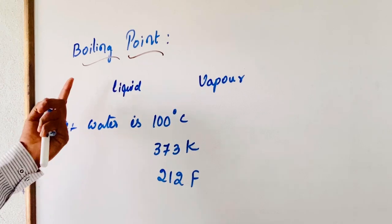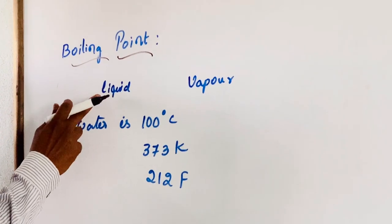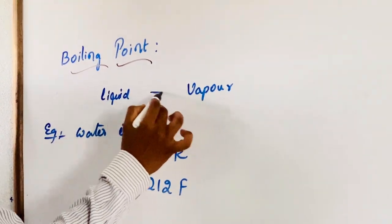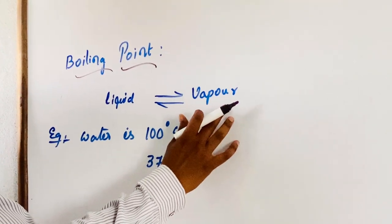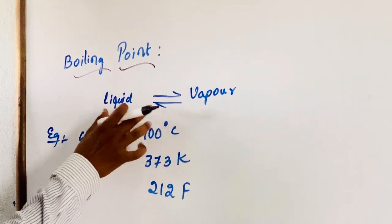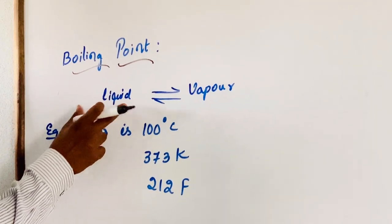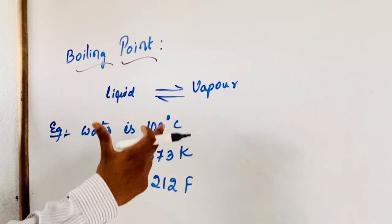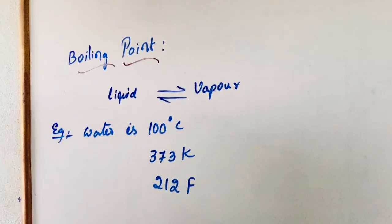What is the other definition of boiling point? The molecules of liquid are in equilibrium condition with the molecules of vapour. At that condition, the vapour pressure of liquid is equal to atmospheric pressure, and that point is known as boiling point.